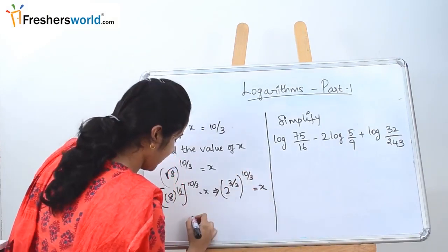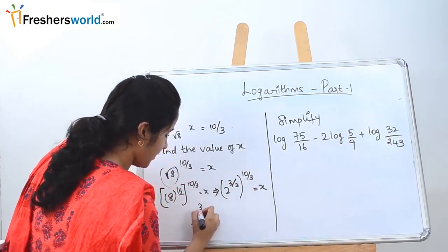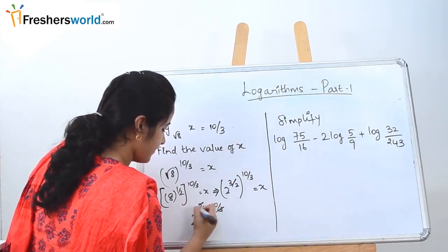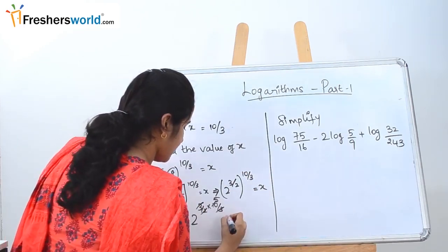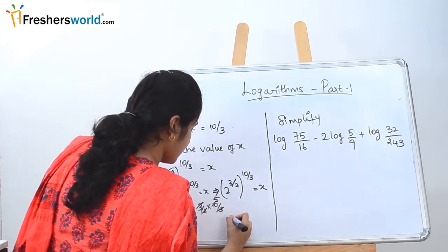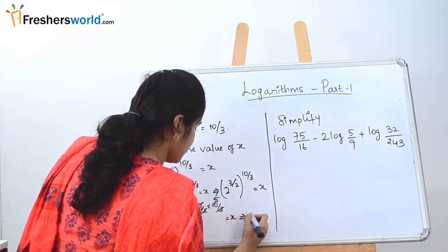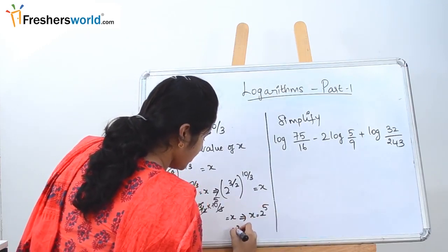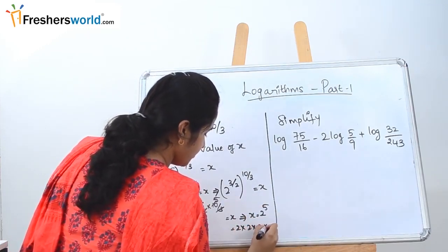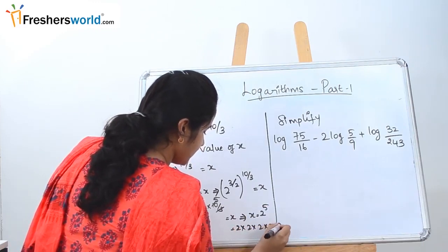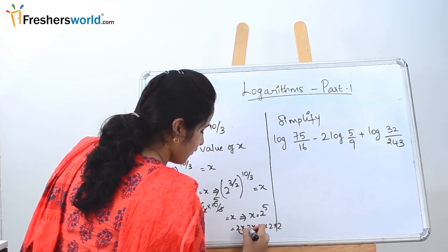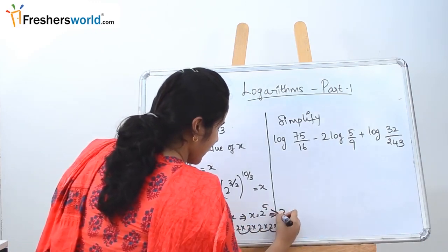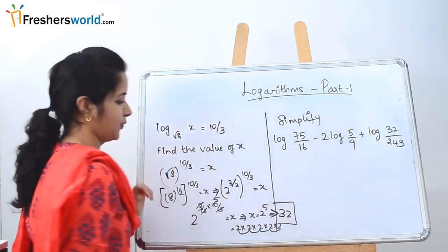These powers can be multiplied: 2 power (3/2 into 10/3). So x is equal to 2 power 5, which is nothing but 2 × 2 × 2 × 2 × 2. Two 2s are 4, 4 to the 8, 8 to the 16, 16 to the 32. So the value of x is nothing but 32.